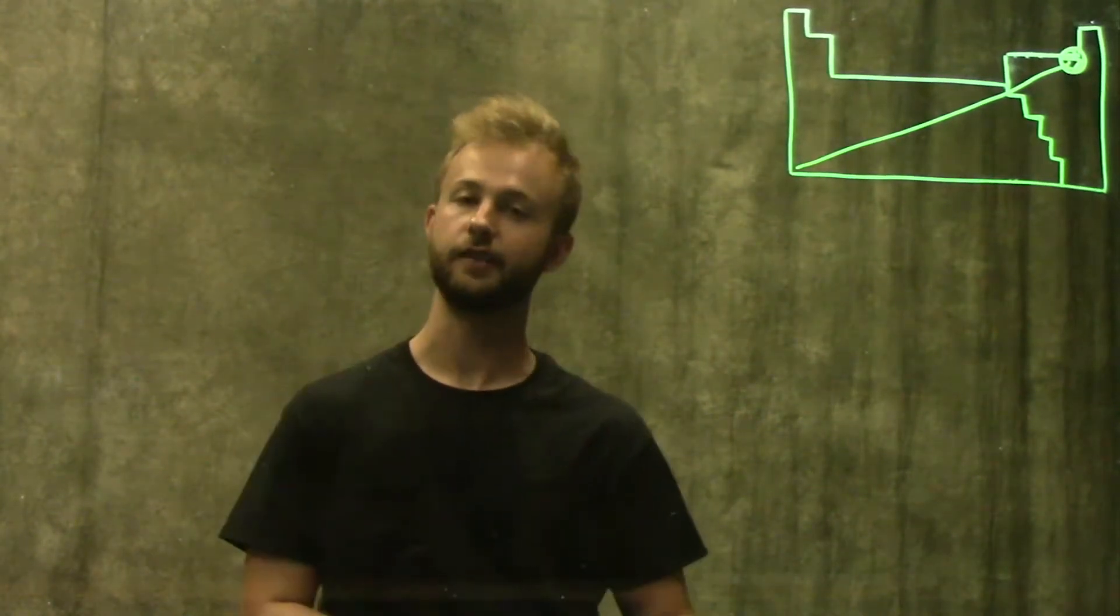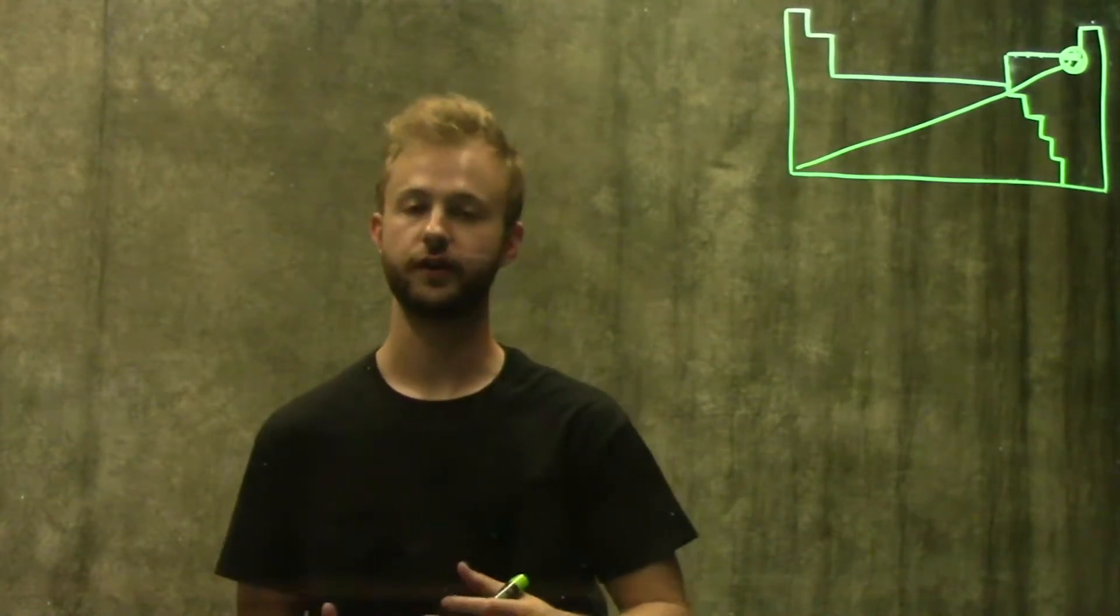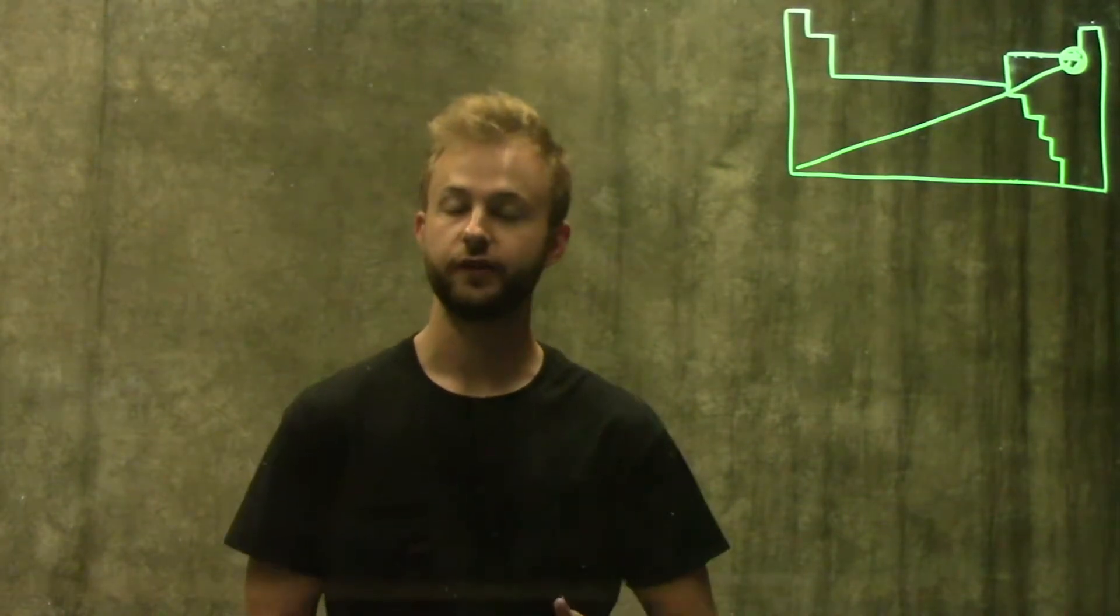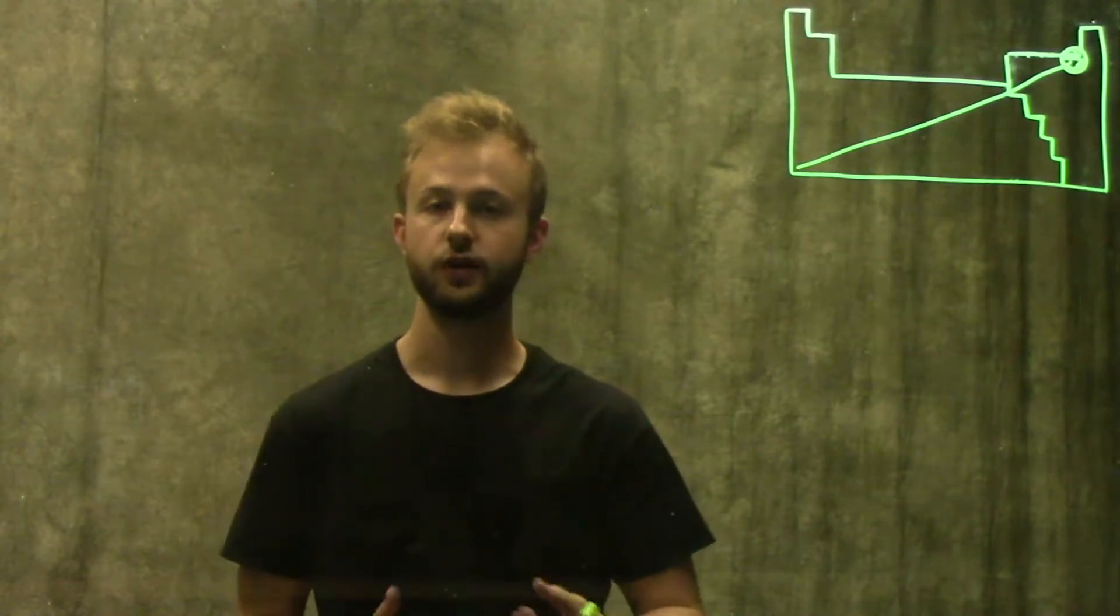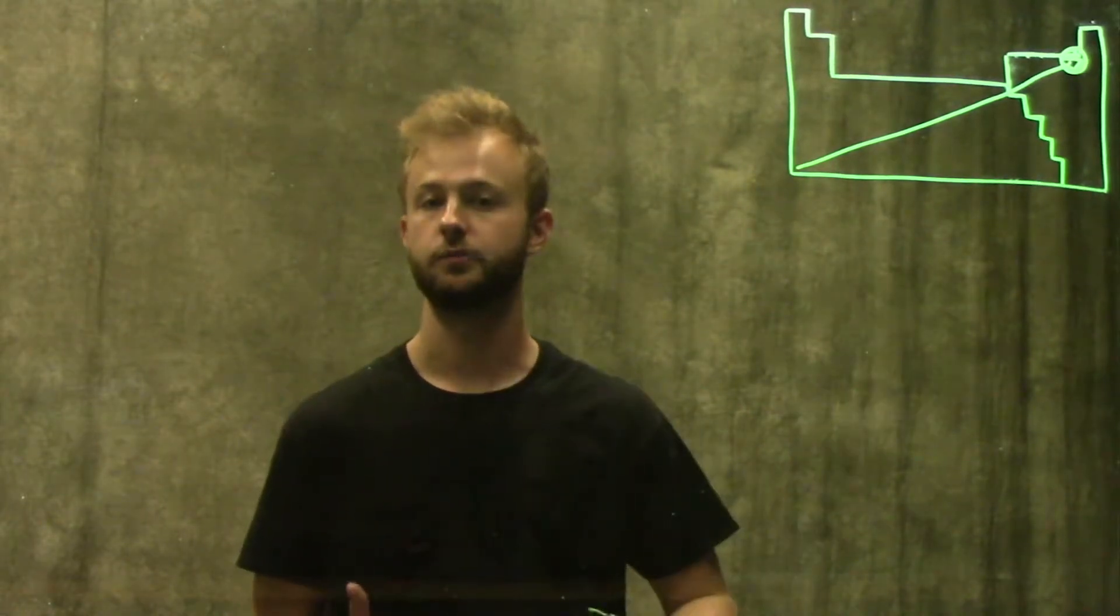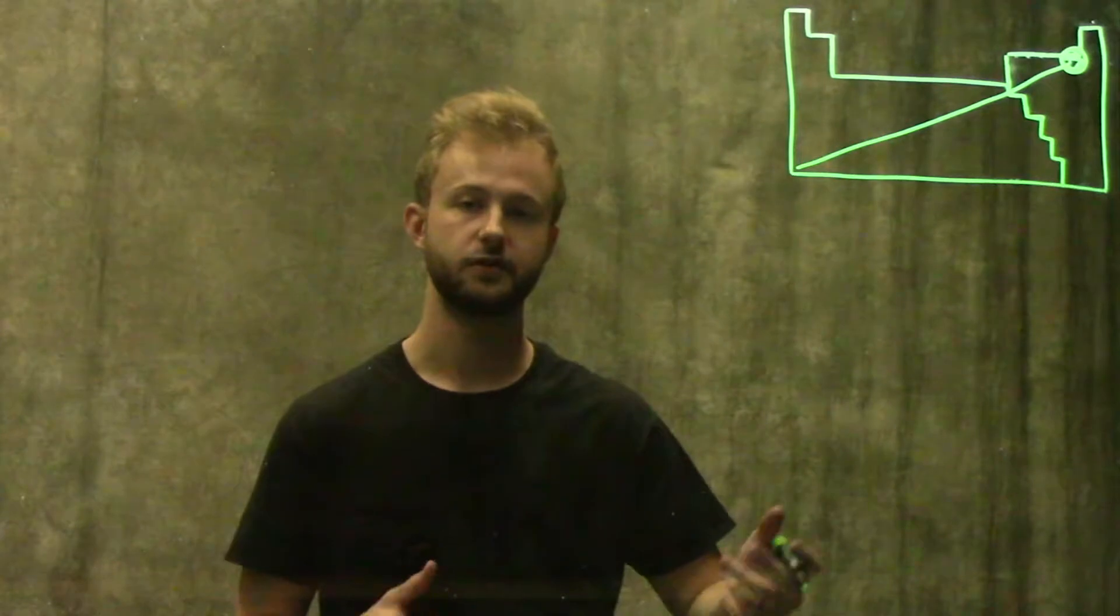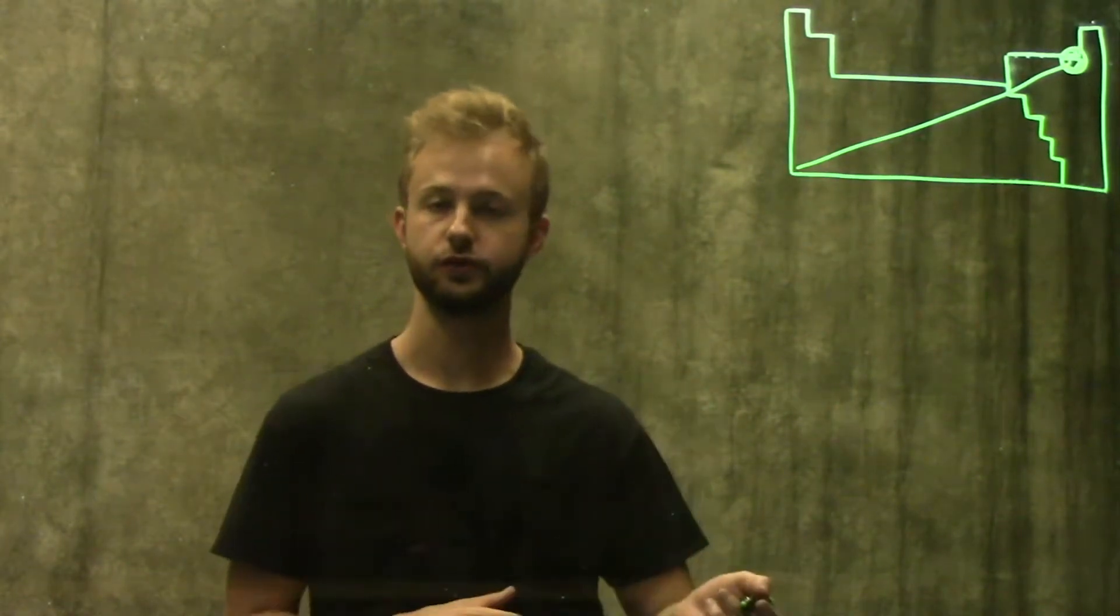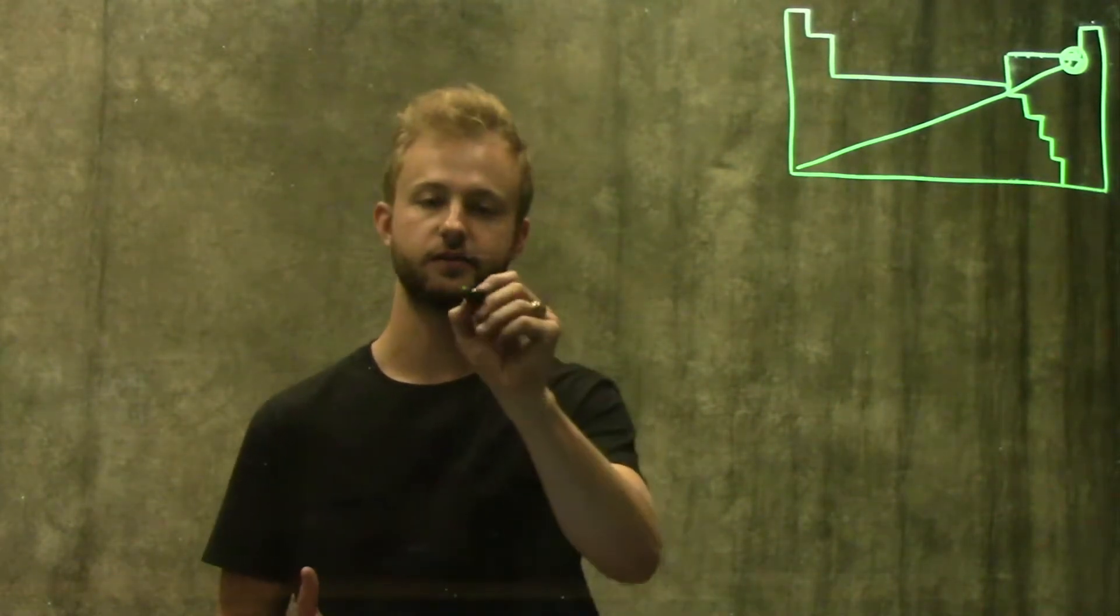Now that we have that figured out, we can move on to what a covalent bond actually is. A covalent bond is going to be a bond between two elements that have pretty similar electronegativities. That means they'll be close together on the periodic table, with the one exception being hydrogen. We'll use a carbon and hydrogen bond as an example.